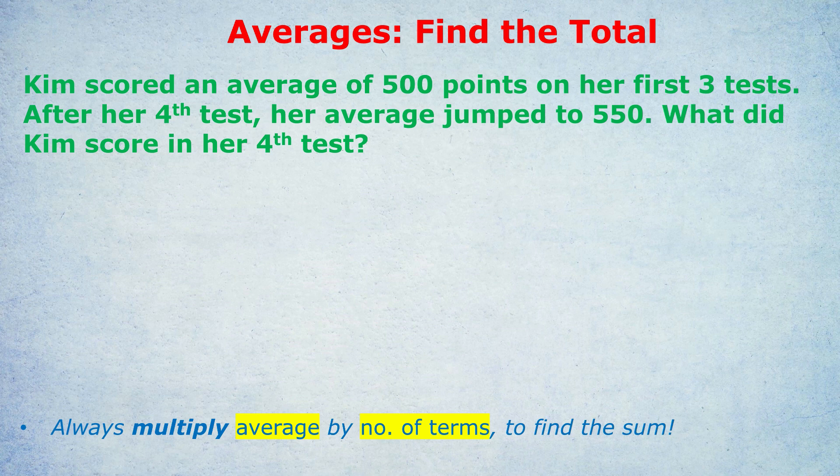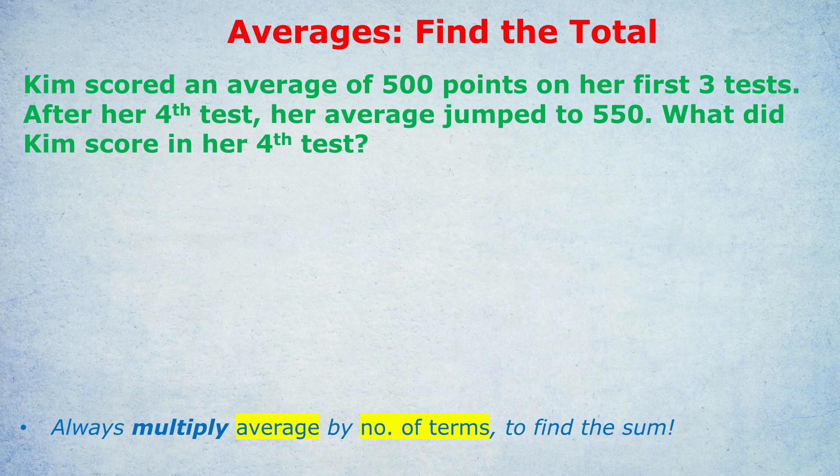This is the trick. Always multiply the average by the number of terms to find the sum. Many times in the GRE and GMAT you're going to be given an average and I want you to multiply that average by the number of terms in the group to find the sum.